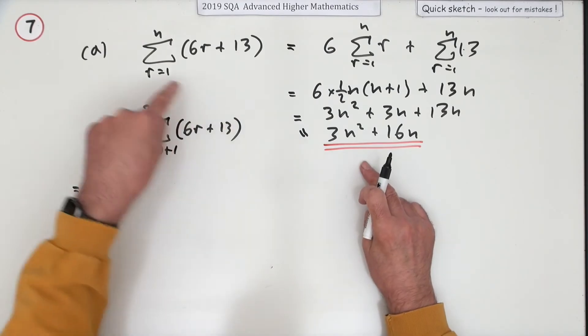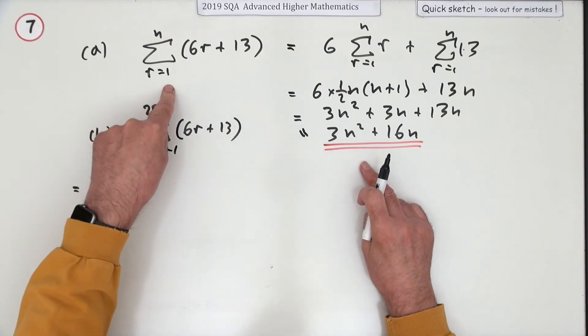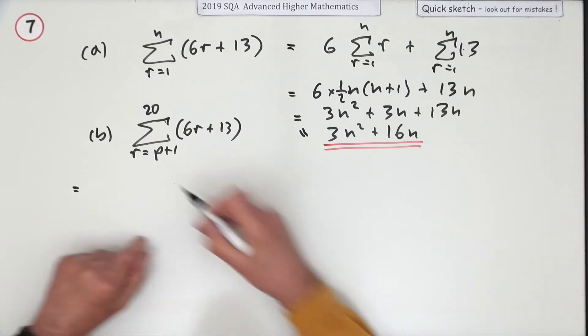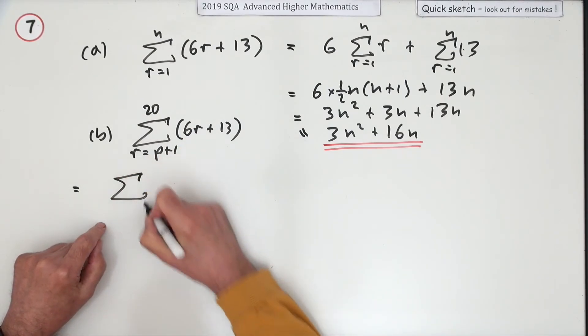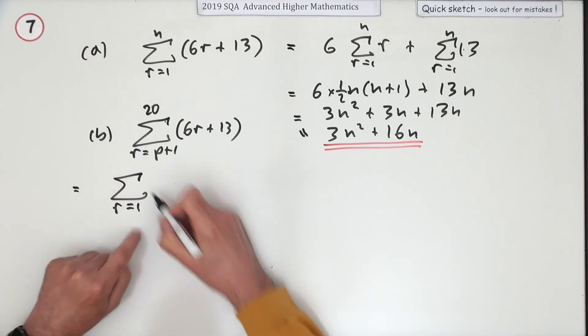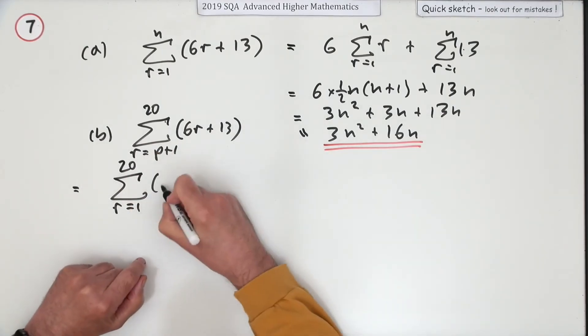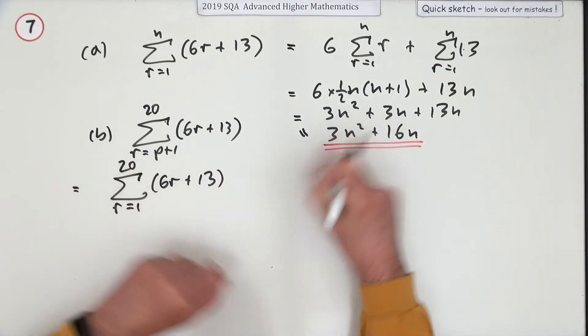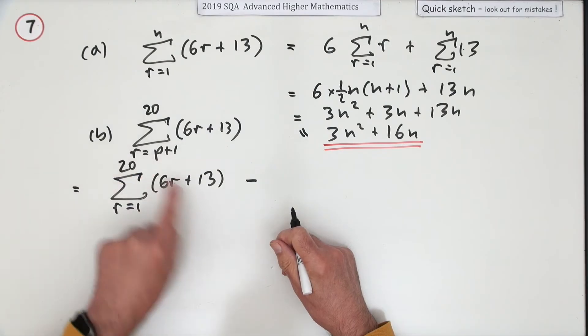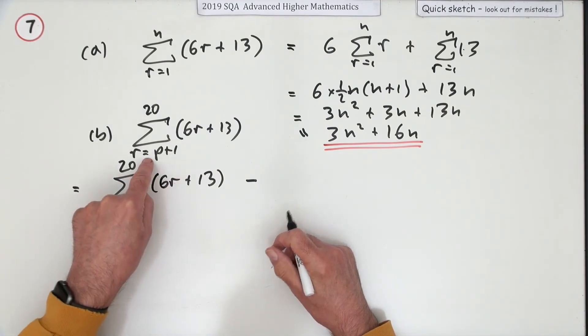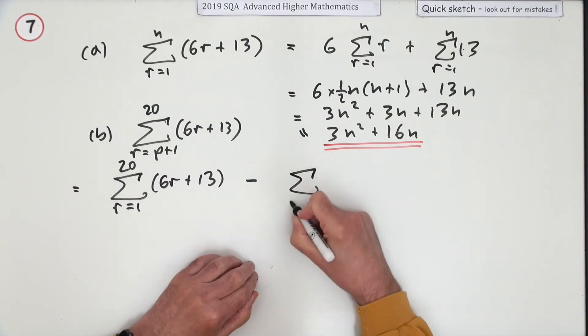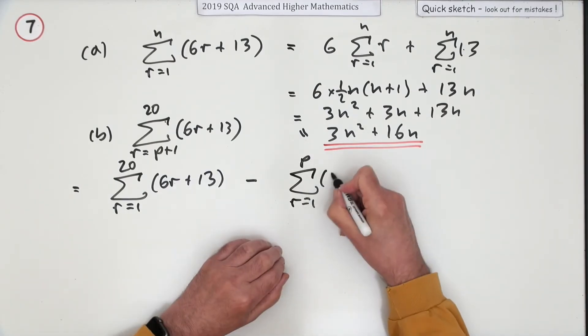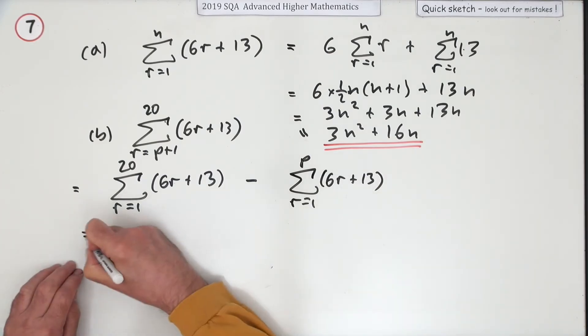This starts part way along, so you'll have to break that into this thing. I only know the formula if I start at one, so I could do one to twenty of 6r plus 13, because that'll just be this with a twenty in it. But I don't want the first p terms, I'm starting at p plus one, so I'll take away all the terms up to the number p of 6r plus 13.